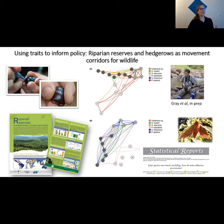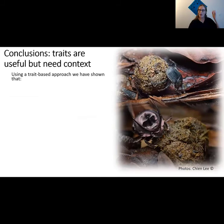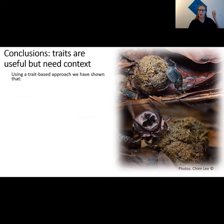We've been using this approach to look at dung beetles in Borneo — mapping how they move across riparian forested corridors within oil palm plantation and looking at the traits that predict movement. Some species just move within the corridor while others come right out into the oil palm plantation. We've actually been incorporating trait data into policy documents and policy briefs given to policymakers in Sabah.